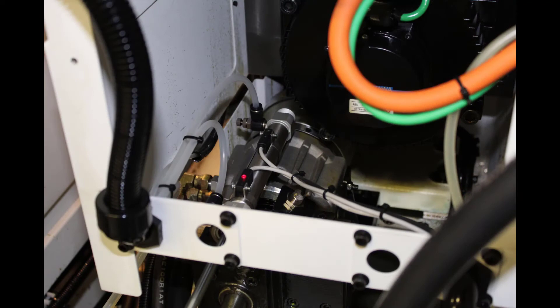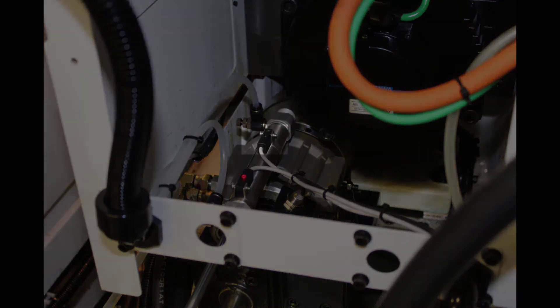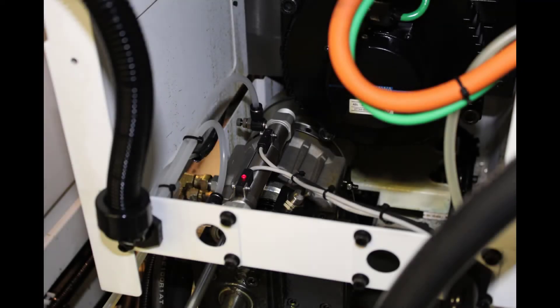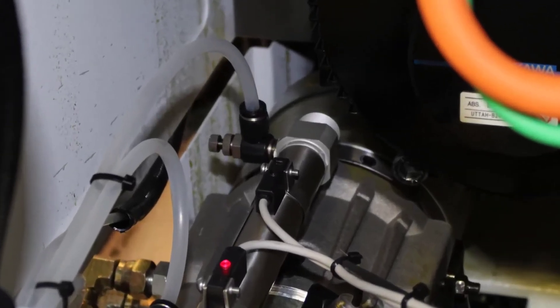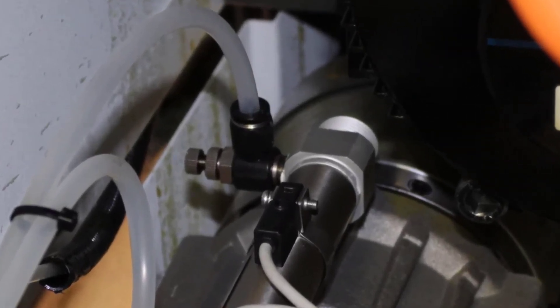Now you need to set the part ejector forward confirmation switch. The cylinder has two proximity switches that have a red light to show when they have been activated. The switch closest to the spindle nose is the part ejector forward confirmation switch.